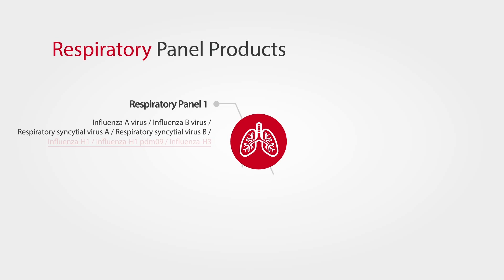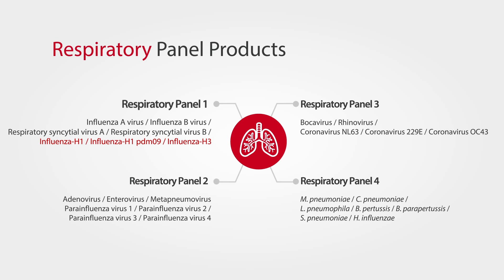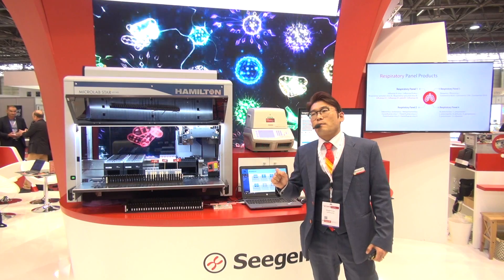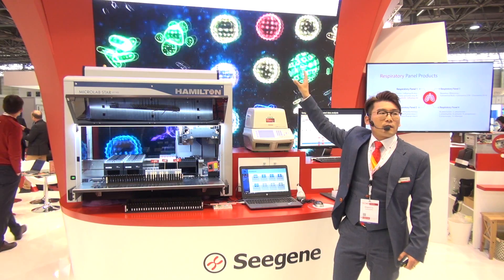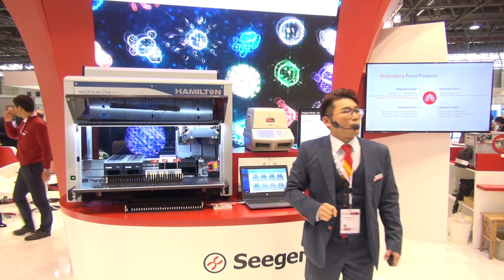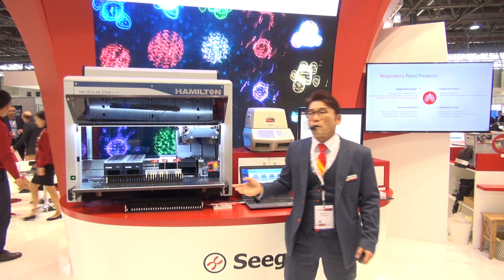Panel one, shown on screen, detects not only Influenza A and B and Respiratory Syncytial Virus A and B, but at the same time distinguishes three different subtypes — H1, H3, and pdmH1N1 2009 — in the same tube simultaneously. Surprisingly, all seven pathogens show individual clear CT values. Because all four panels share the same PCR conditions, you can combine the panels for your main screening assays, which also enables subtype analysis for monitoring purposes.